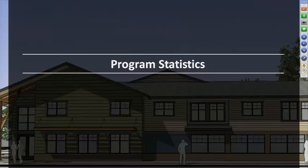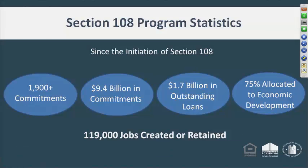Let's take a look at some interesting facts about our Section 108 program. The Section 108 program has made well over 1,900 commitments since 1978 — almost 37 years ago. Those commitments represent approximately $9.4 billion. The program manages around $1.7 billion in outstanding loans. Seventy-five percent of our commitments are allocated to economic development activity, resulting in the creation or retention of 119,000 jobs.